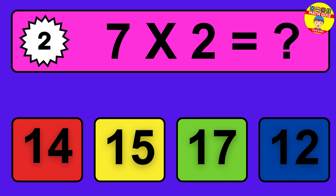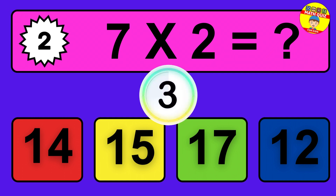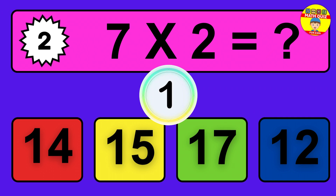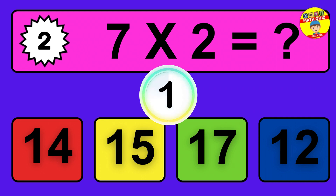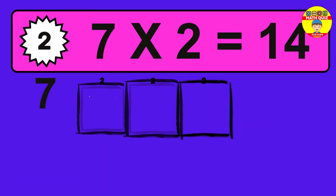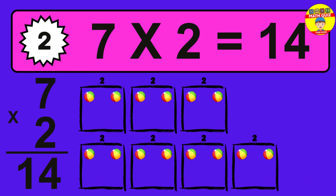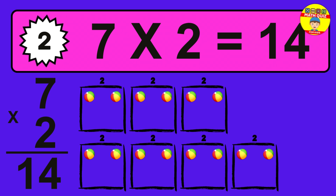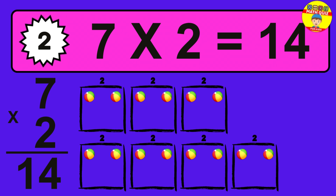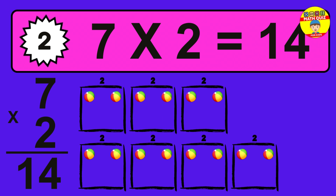Question 2. 7 times 2 equals what? The answer is 7 times 2 is 14. To calculate, we have 7 groups with 2 balls each one. So how many balls do we have? 14 balls.